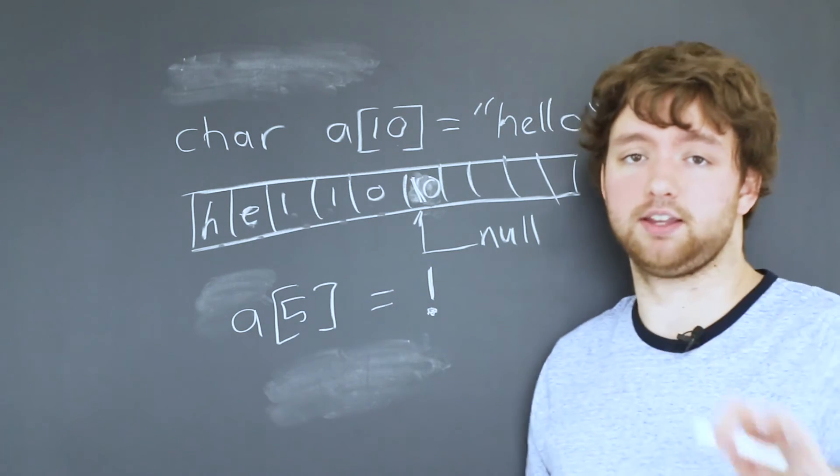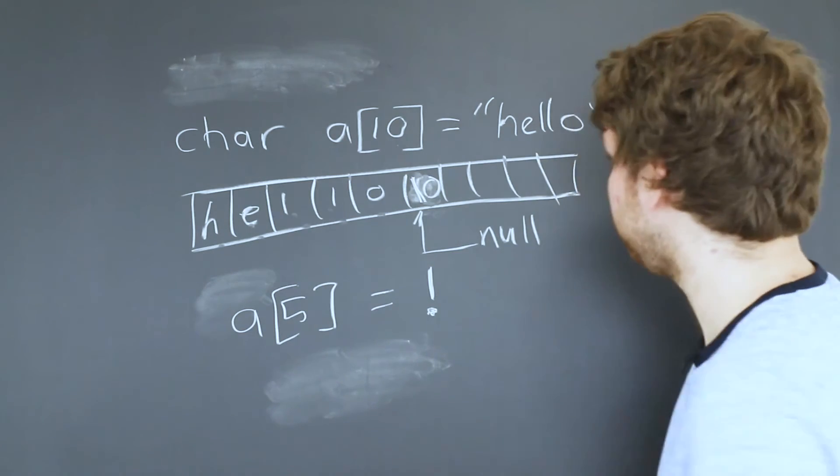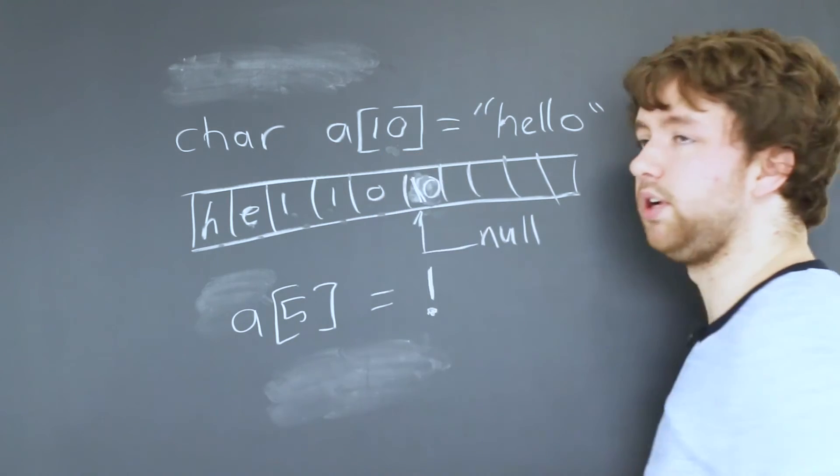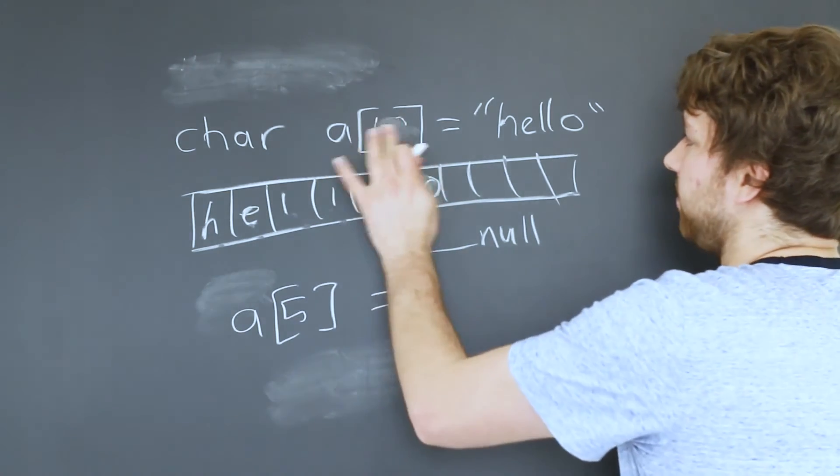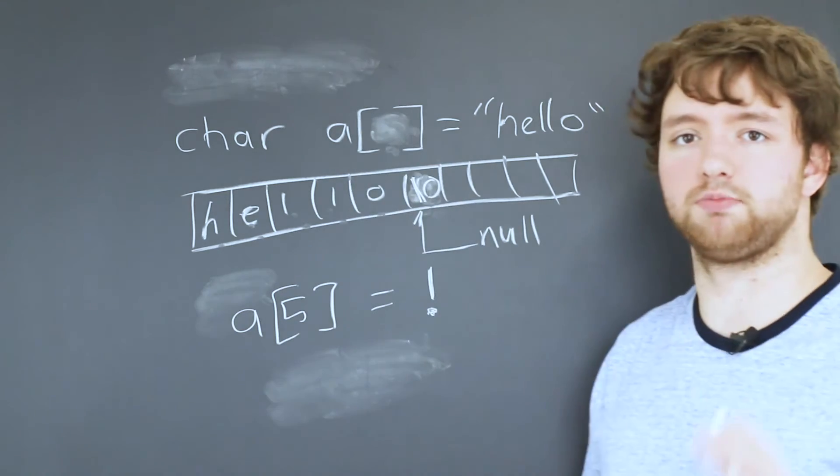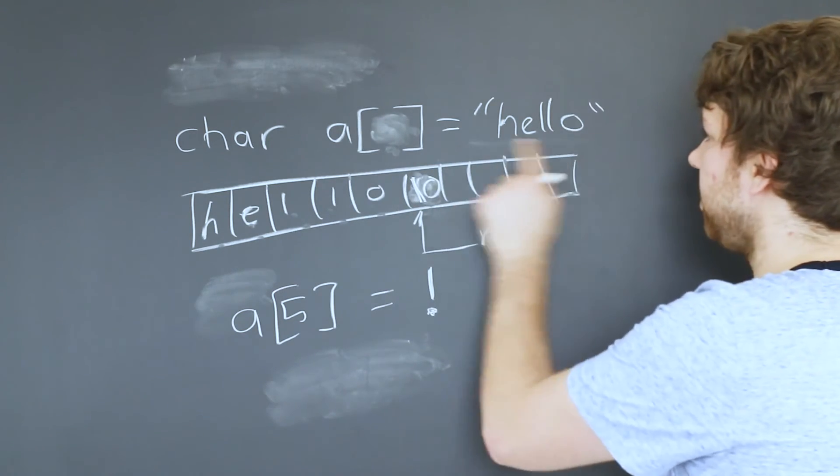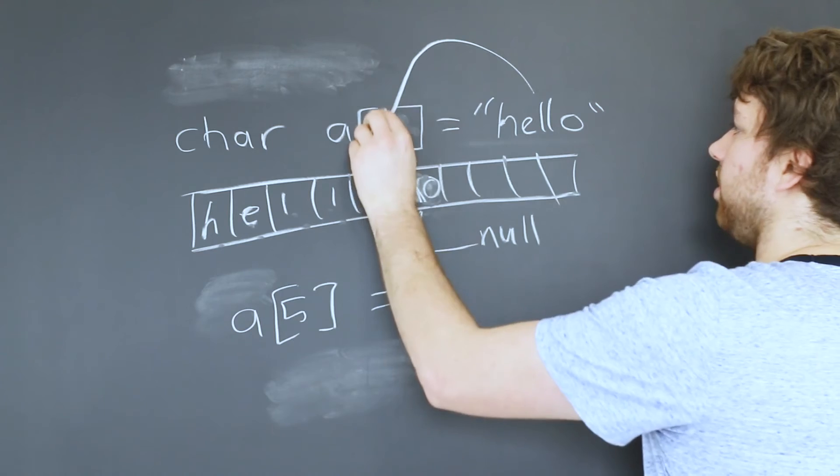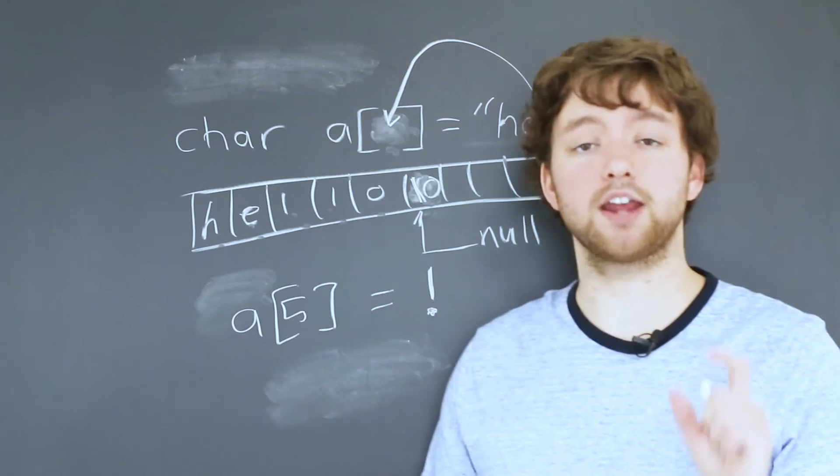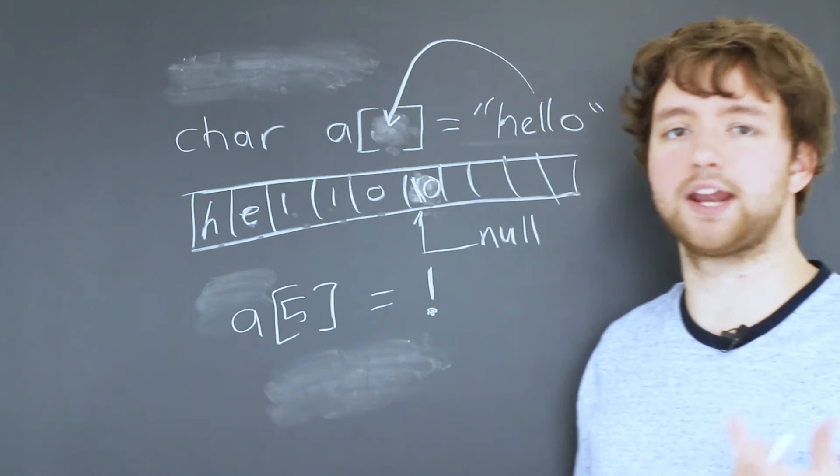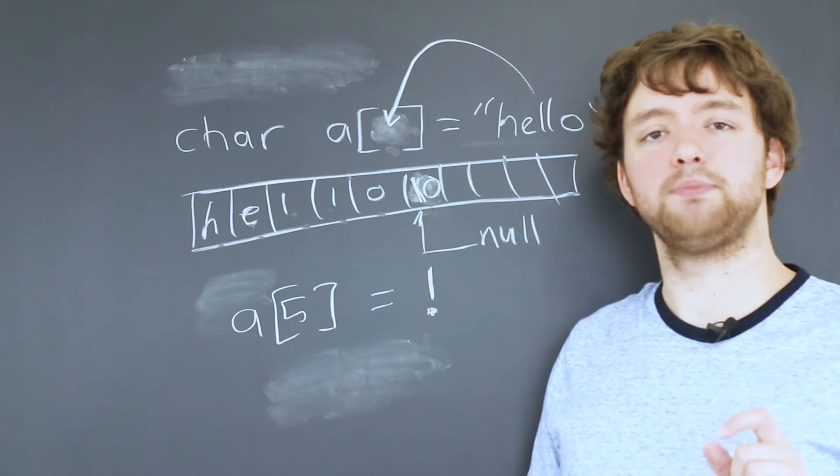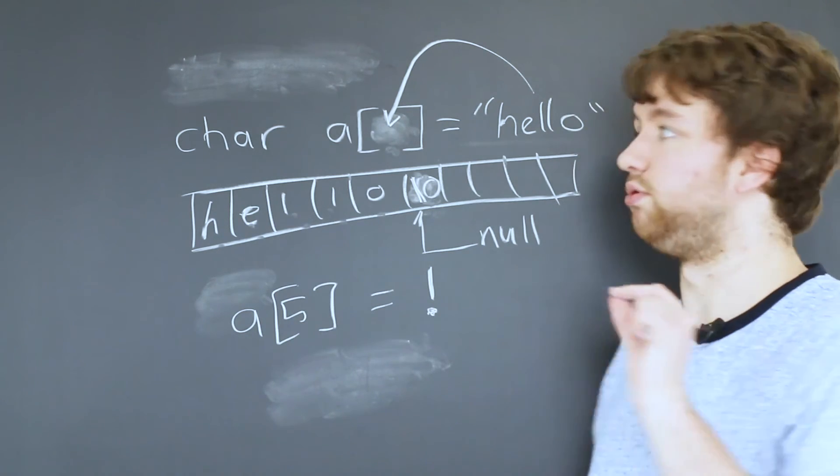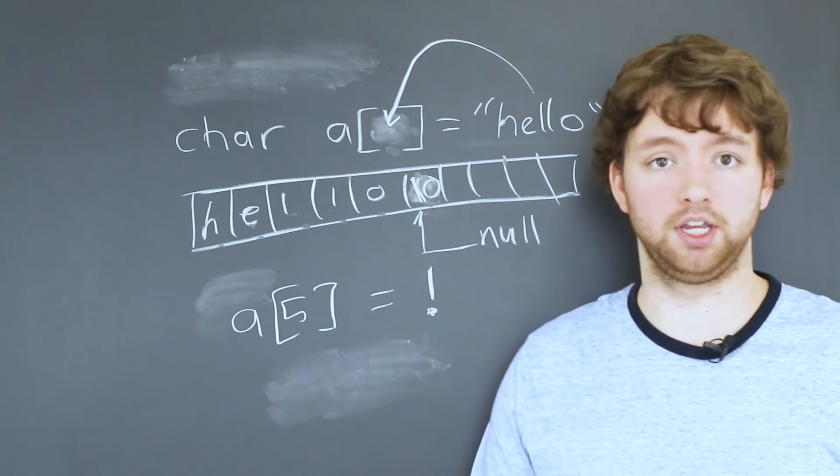Now going back to the sizing thing I mentioned earlier, here I put a 10, but I would actually generally not recommend this. I would leave this empty. And the reason that works is because the size of this can be used to determine this. And this happens at compile time. So it's still statically sized. It's not dynamically sized now. What happens is the compiler is the one to decide how long the string array needs to be.